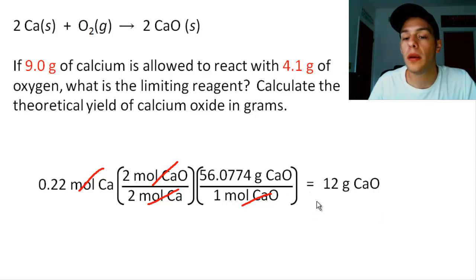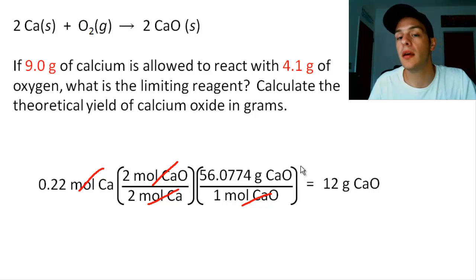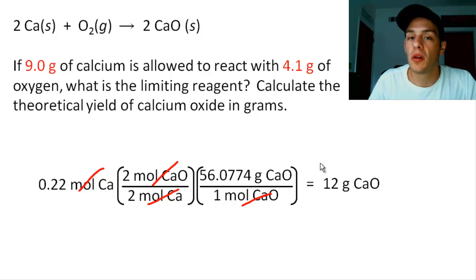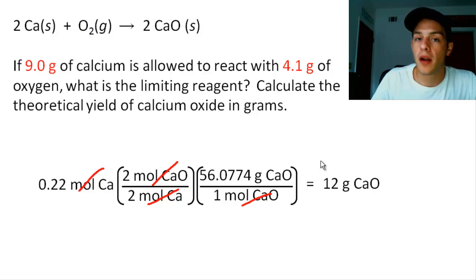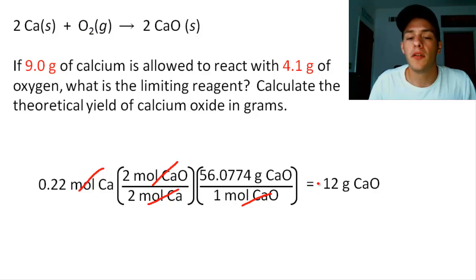That is how we determine the theoretical yield. First figure out your limiting reagent. To recap: convert masses into moles, figure out how much of one reactant is required to react completely with another, then compare to see if you have more than enough or not. Once you determine the limiting reagent, use it to convert from moles of a reactant to moles of the product, then use molar mass to convert to grams. It's a pretty involved process, but with practice you'll be able to do it quickly.